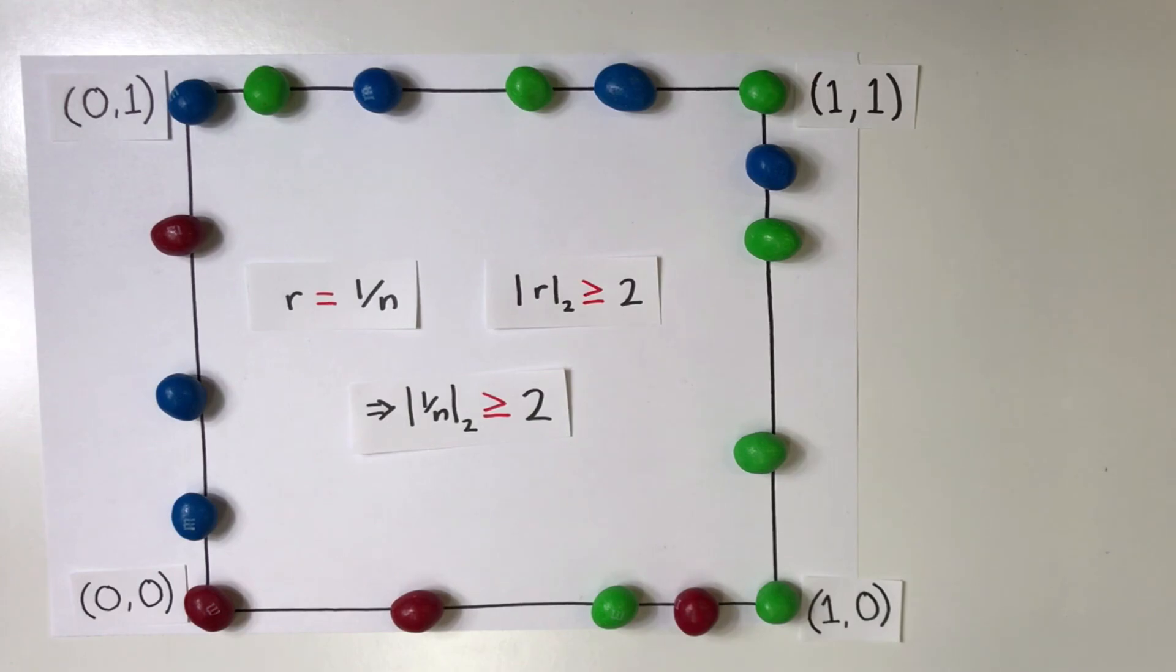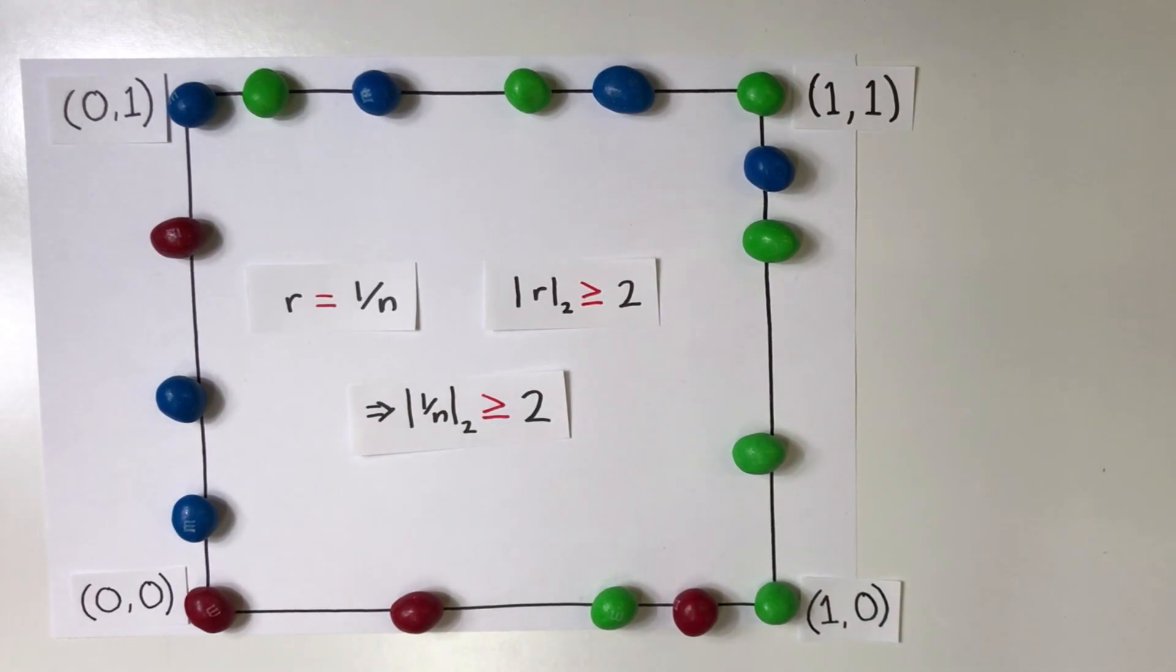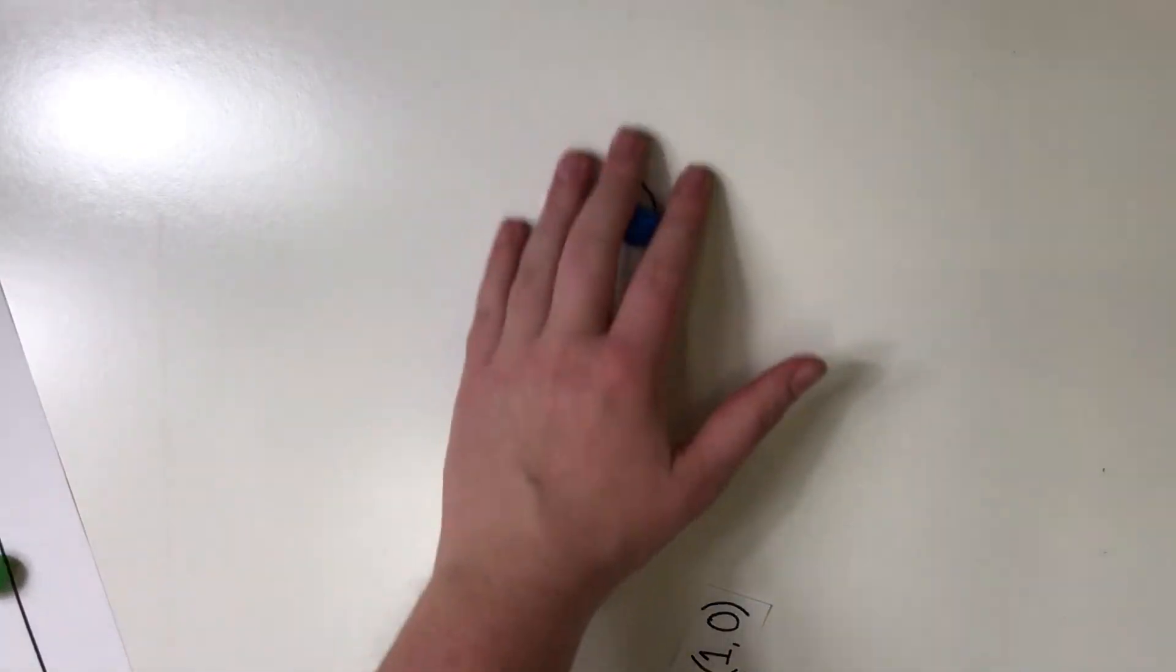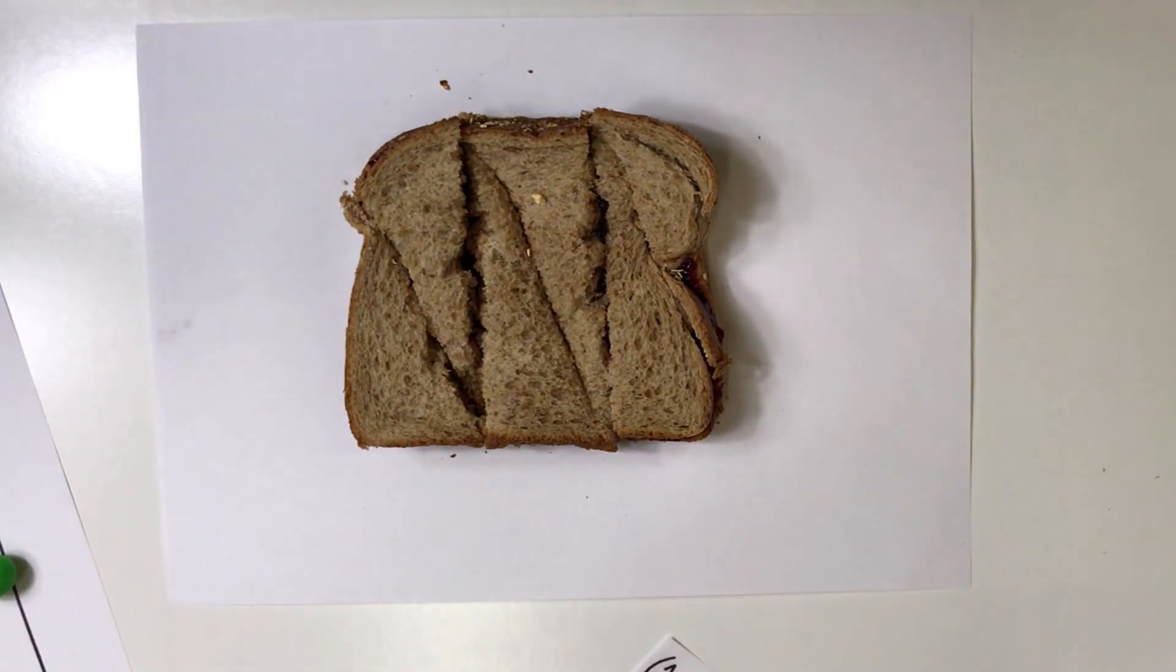Now, we know the answer to our problem. Because the 2-adic valuation of 1 over n is greater than or equal to 2, then we know that n must be even.